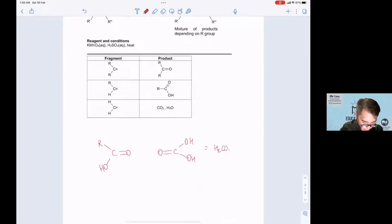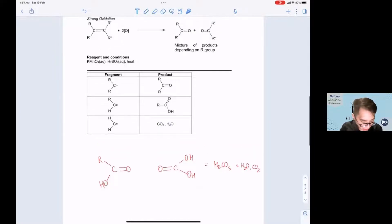H2CO3 is equal to H2O and CO2. So therefore, if your fragment both are H, you end up with CO2 and H2O as the product. If both are R groups, they will remain the same. If one is R, one is H, the H will become OH.